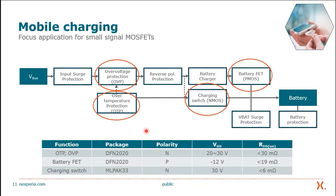There is one application where really many small signal MOSFETs are used: mobile charging. Any device which is battery-driven needs a charge from time to time, and here small signal MOSFETs are used for over-voltage protection, over-temperature protection, as a battery FET, or as a charging switch.